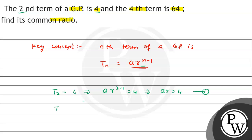So t4 = 64. Using the formula: ar^(4-1) = 64, which gives ar^3 = 64. This is equation 2. Now dividing equation 2 by equation 1.